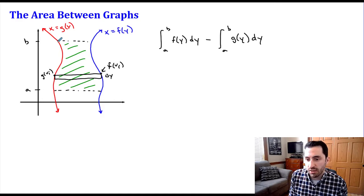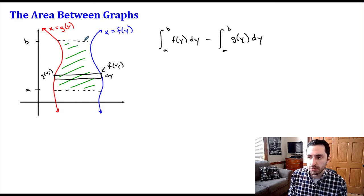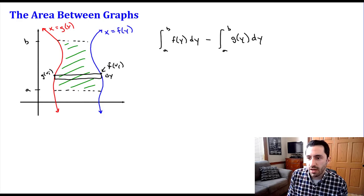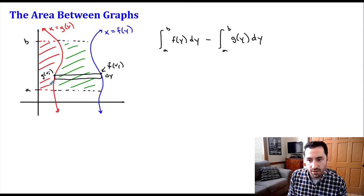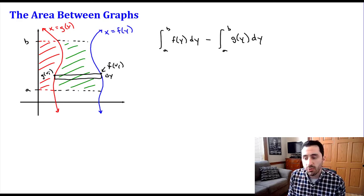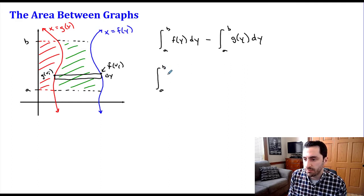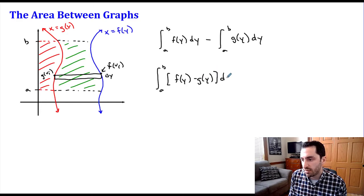So if we subtract those two integrals — the first giving the area between the blue graph and the y-axis, and the second giving the area between g and the y-axis — all we're left with is the area in between them. Using the properties of integrals, we can write this as a single integral from a to b of f(y) minus g(y), dy.